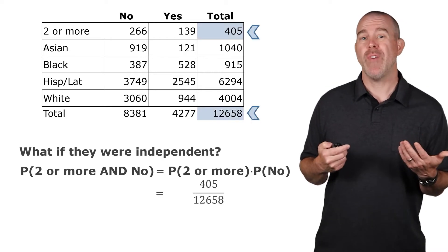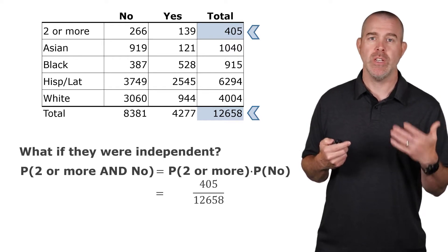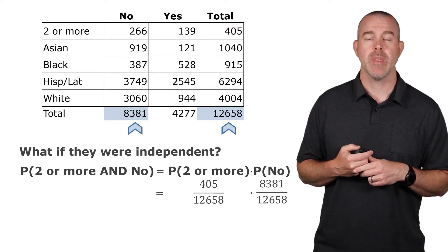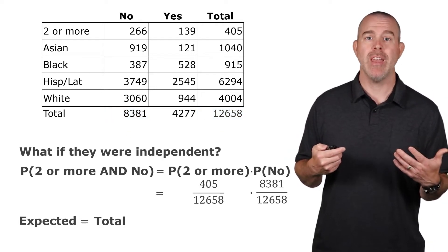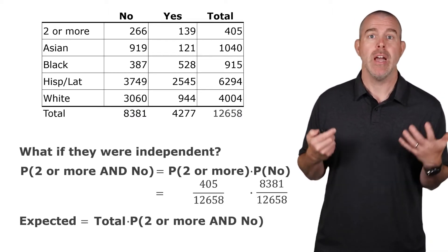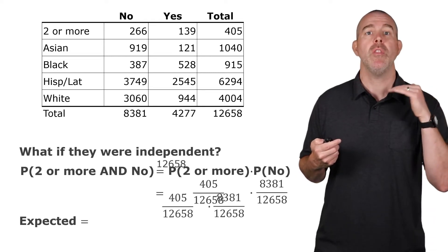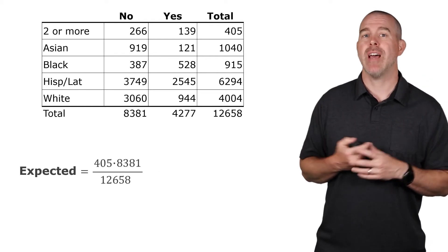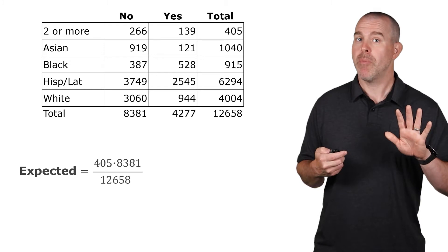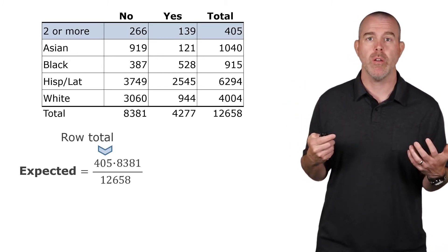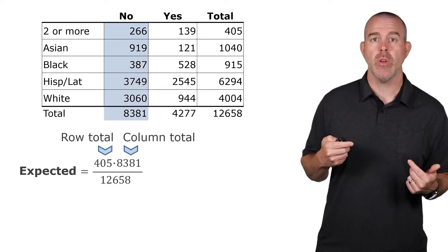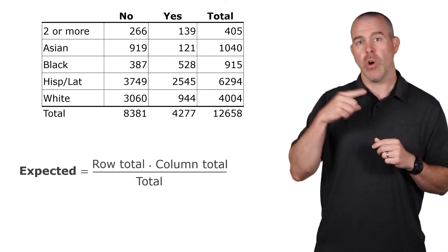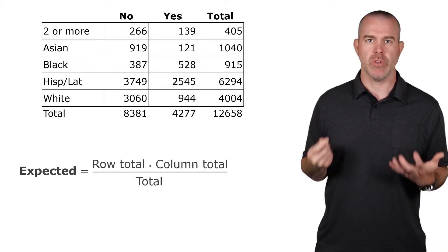In this case, that should be 405 out of 12,658 — that's the probability that a randomly selected student is of two or more race or ethnicities — times 8,381 over 12,658, which is the probability of not having a discipline referral. What we would expect, if they were independent, is to take the total and multiply by the probability of being two or more and no. That would be the expected count. You can simplify to get 405 times 8,381 over 12,658, where 405 is the row total, 8,381 is the column total for no, and 12,658 is the overall total. Generalizing, the expected count for any cell is the row total times the column total divided by the overall total.